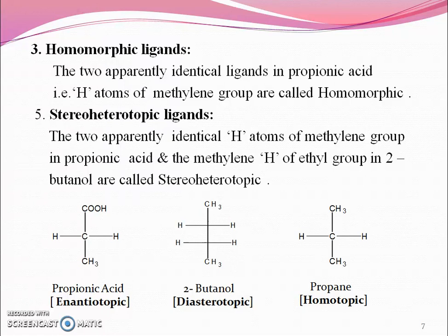Stereoheterotopic ligands: the two apparently identical hydrogen atoms of the methylene group in propionic acid and the methylene hydrogen of the ethyl group in 2-butanol are called stereoheterotopic. These include the enantiotopic hydrogens in propionic acid, 2-butanol, and diastereotopic hydrogens. In propane, this is an example of homotopic hydrogens.